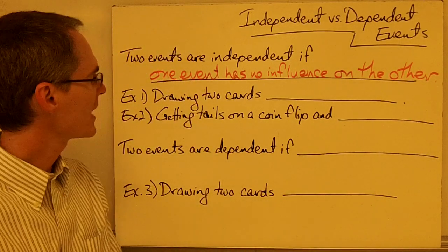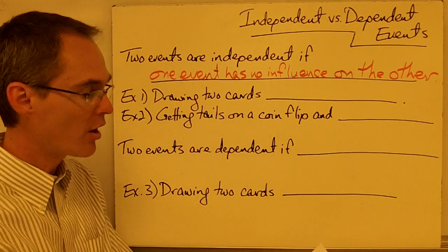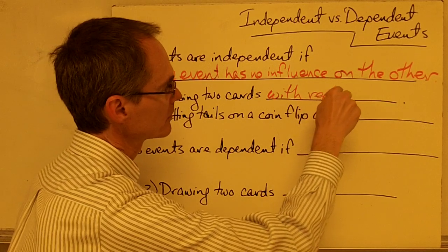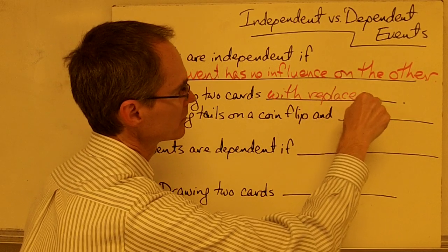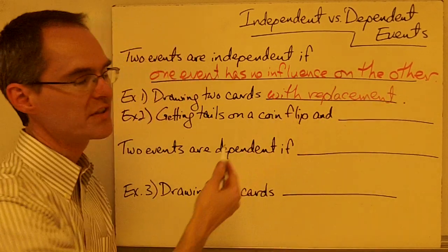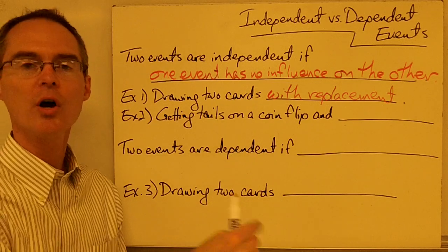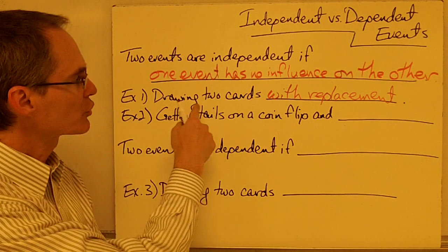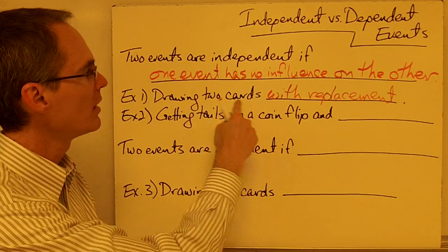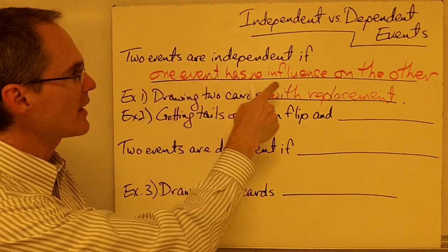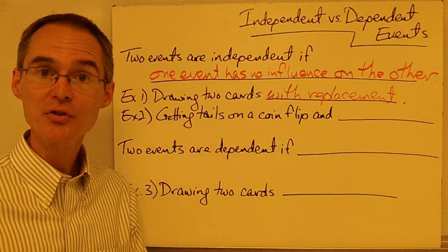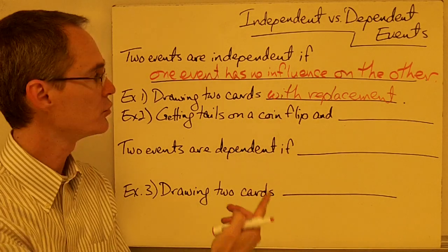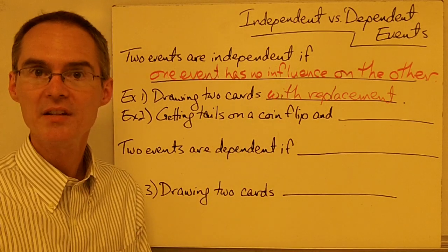An example might be drawing two cards with replacement. If you draw a card from a deck, and then you put it back in the deck, and then you draw a second card, that's called drawing two cards with replacement. Those two events don't have any influence on each other. The first card that you draw doesn't influence the second card, because you're putting the first card back in the deck.